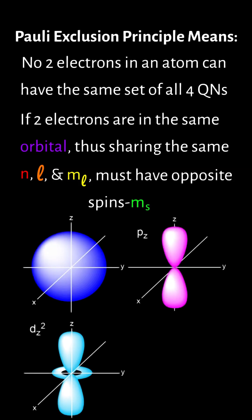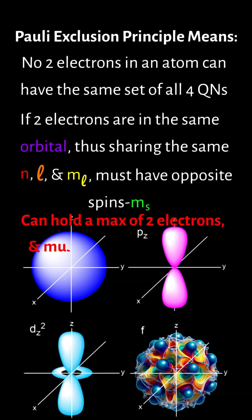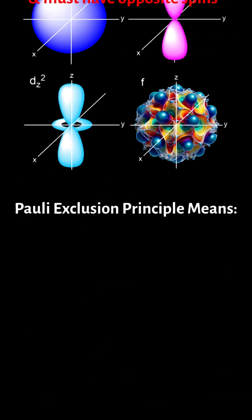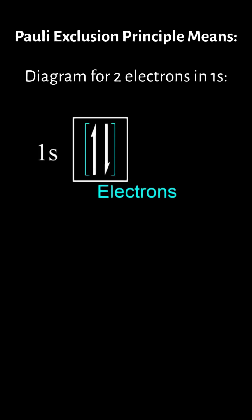Simplified, this means that an atomic orbital can hold a maximum of two electrons, and they must have opposite spins. A diagram for two electrons in the 1s orbital would look like this. The half arrow represents one electron, and you can see that one is pointing up while the other is pointing down.